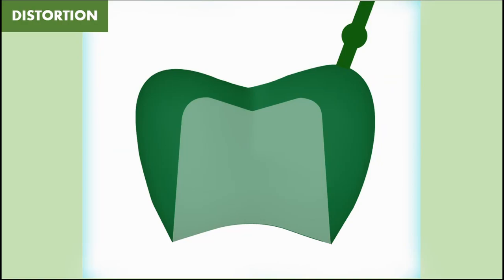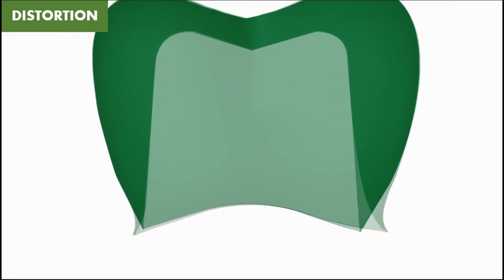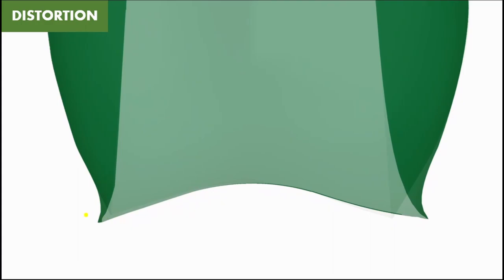Distortion of the wax pattern occurs as the investment hardens around it. The setting and hygroscopic expansion of the investment may produce a non-uniform expansion of the walls of the wax pattern. The thin gingival margins are forced apart by the mold expansion whereas the thicker occlusal part of wax resists expansion during the early stages of setting. The configuration of the pattern, the type of wax and the thickness of the pattern influence the distortion that occurs.